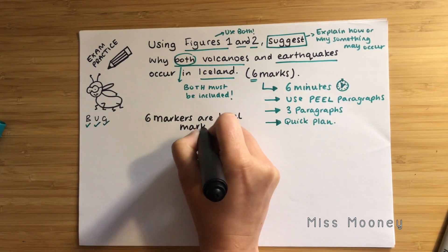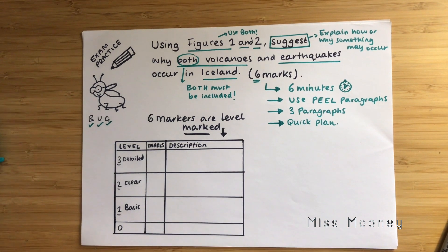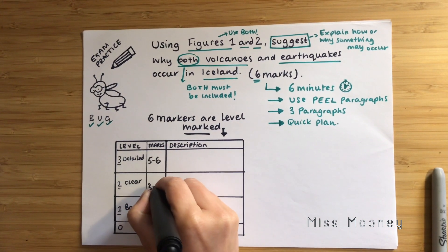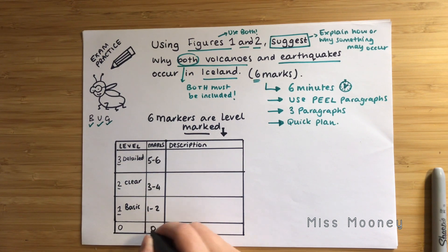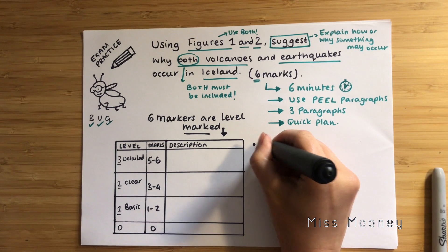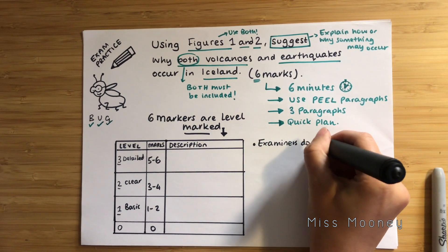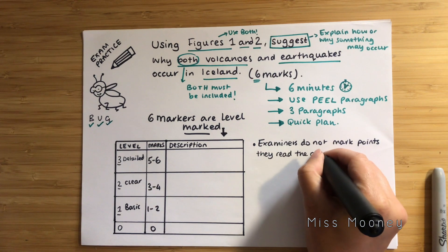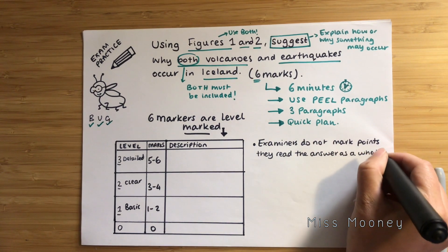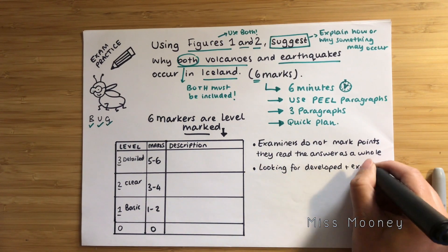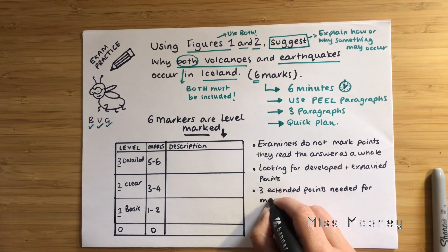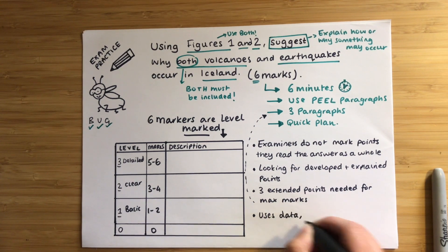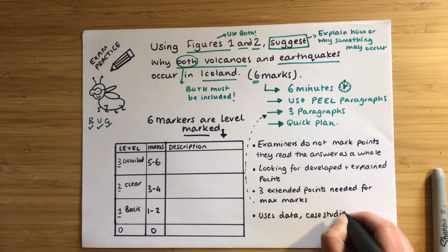Six mark questions are level marked in geography. Level three, which is detailed, will get you five or six marks. Level two, which is clear, will get you three to four marks. Level one, which is basic, gets you one to two marks, and level zero means zero marks. The examiner won't give you marks per specific point — they read the answer as a whole and decide where you fit in that table. The examiner will be looking for developed and explained points, so we need three extended PEE paragraphs for maximum marks. For any six or nine mark questions it is essential that you use evidence and examples in a structured way — data, case study facts and figures, named places and named examples.